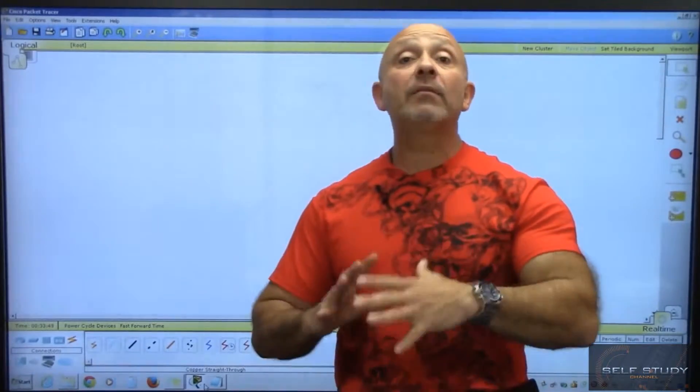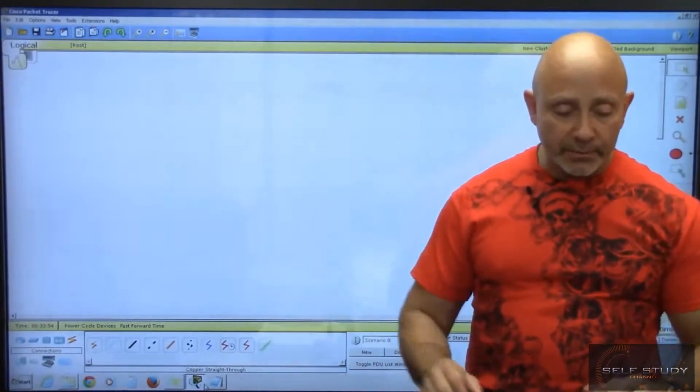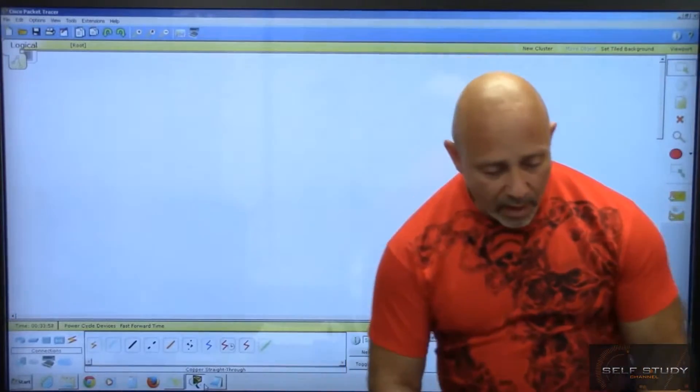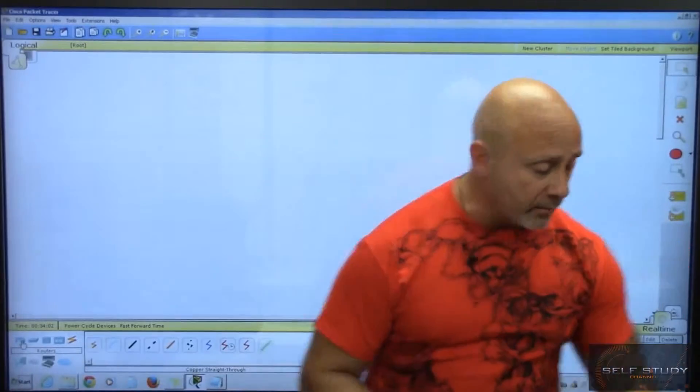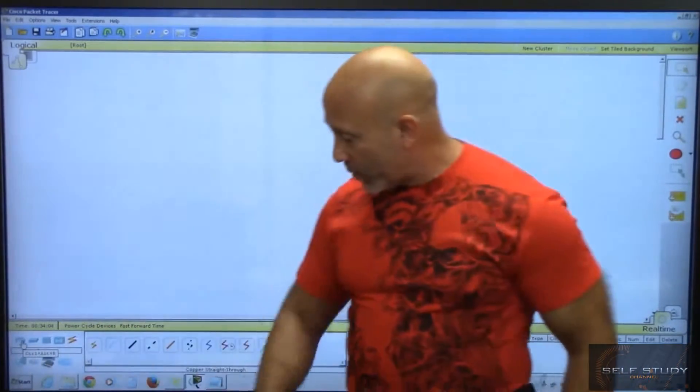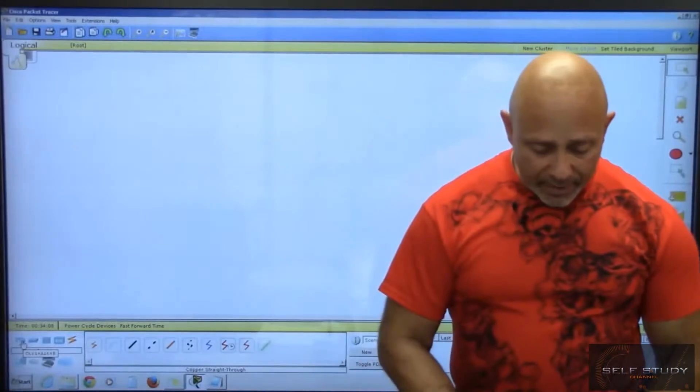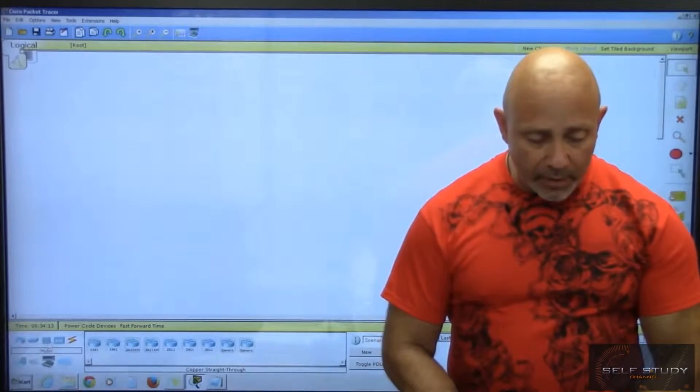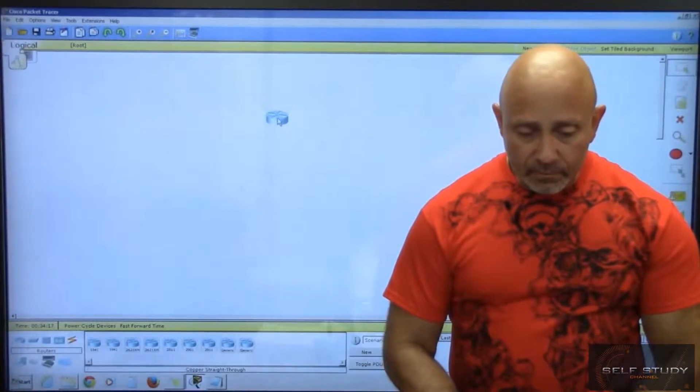Let's go ahead and do that. We're in Packet Tracer. I'll move to one side. We want to go to our routers right down here. Right over here, okay. Pick a router, we're going to pick the 1841 router and drag it out, put it on the top.